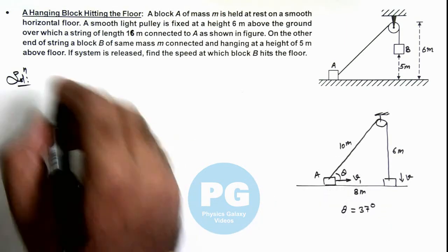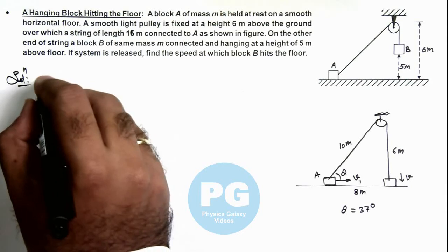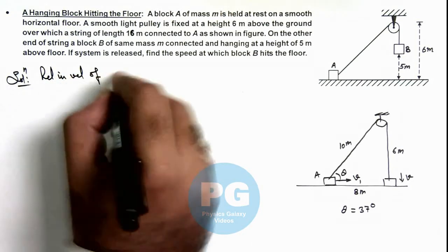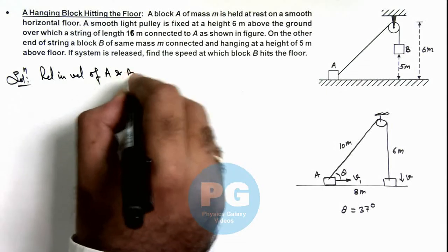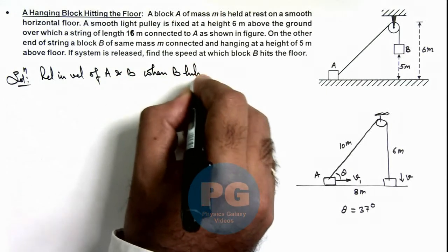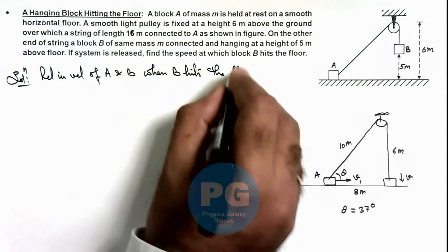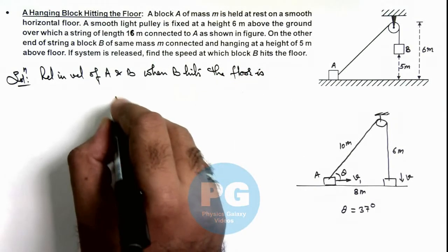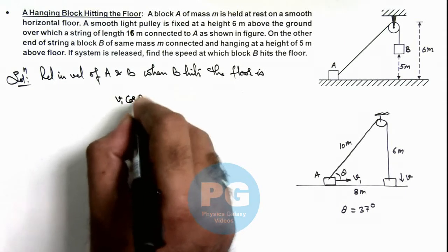Now in this situation, we can write the relation in velocities of A and B when B hits the floor. This can be written as v1 cos theta equals v.